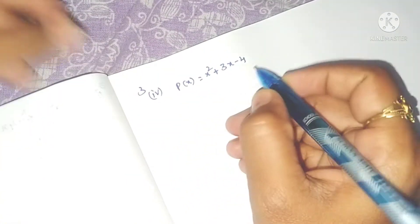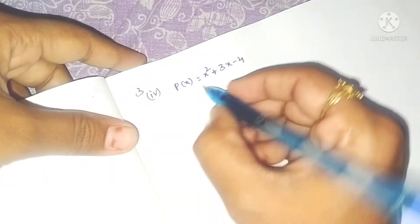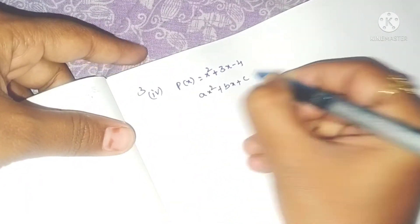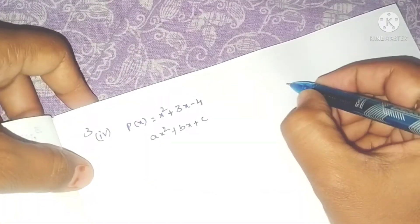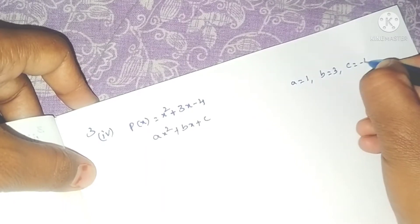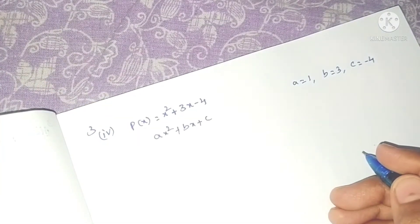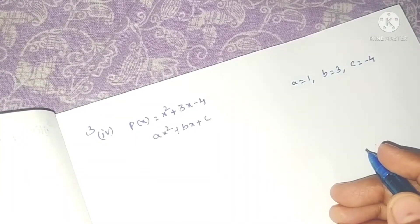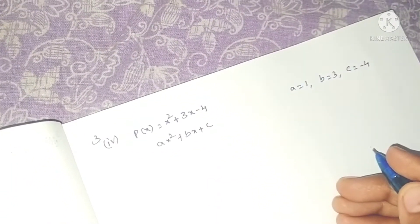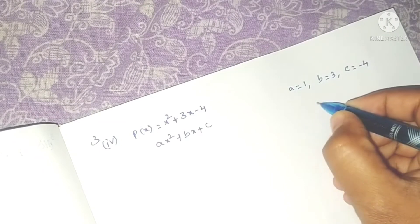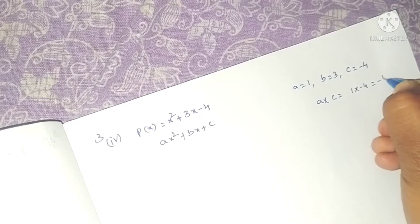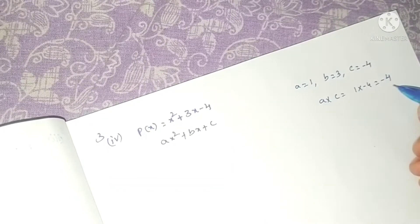First of all, we will find out the zeros of this polynomial. To compare this polynomial to ax square plus bx plus c, a value is 1, b equals 3, and c value is minus 4.